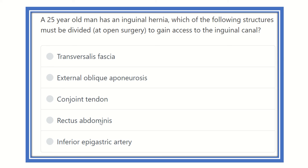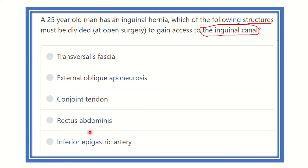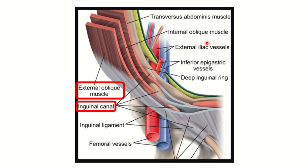Welcome everyone. A 25-year-old man has an inguinal area problem. The question asks: which of the following structures must be divided to gain access to the inguinal canal? The options are: transversalis fascia, external oblique aponeurosis, conjoined tendon, rectus abdominis, and inferior epigastric artery. We need to find out which structure should be cut to enter the inguinal canal.